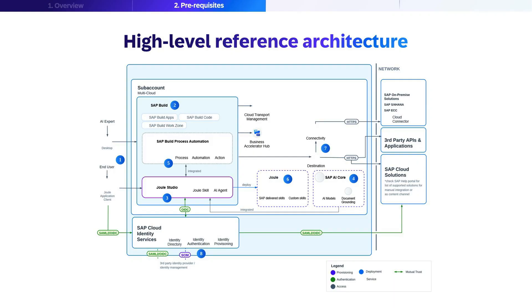Let's examine the reference architecture for developing and deploying Joule skills within the SAP BTP ecosystem. This diagram illustrates how Joule skills are built and integrated across the SAP landscape, starting from the left with end-user access to Joule through the Joule application client, which serves as the primary interface for interacting with AI-powered skills.